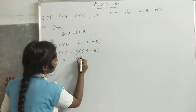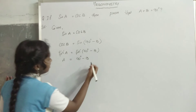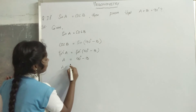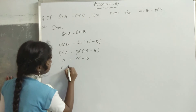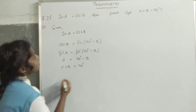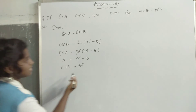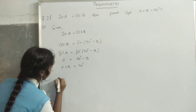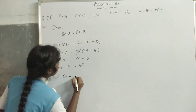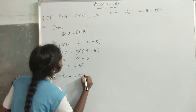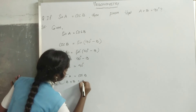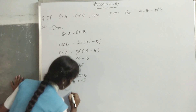A is equal to 90 degrees minus b. Transpose minus b to the left hand side. It becomes plus b, so a plus b is equal to 90 degrees. Therefore, sin a is equal to cos b implies a plus b is equal to 90 degrees. Hence proved.